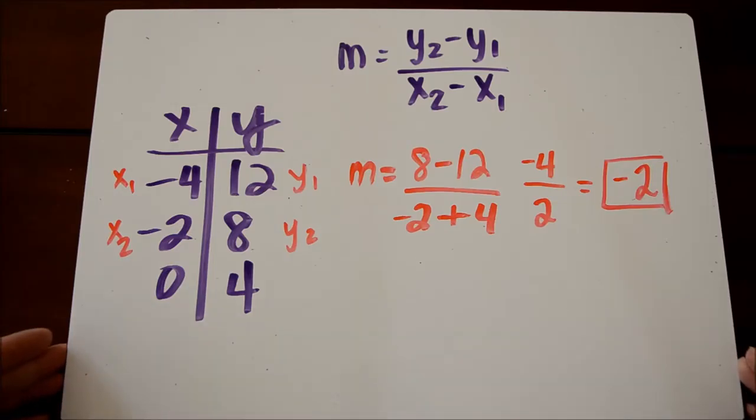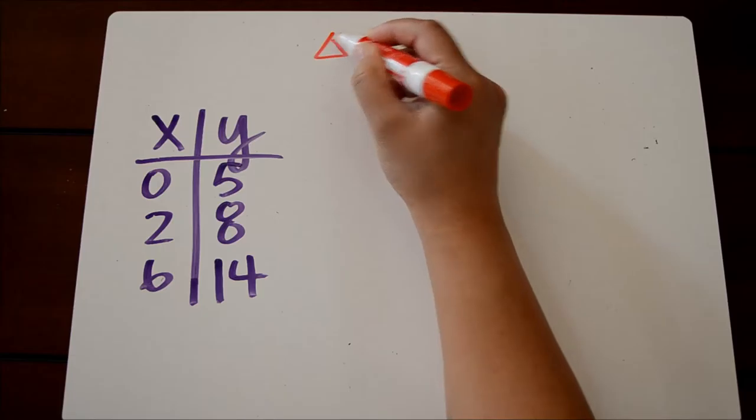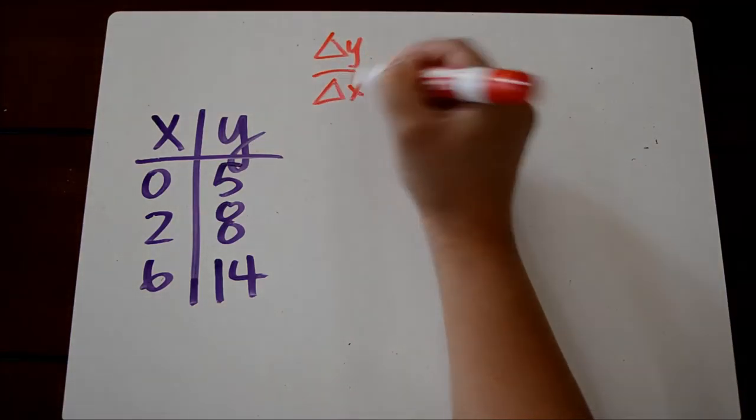All right, let's take a look at one more example. We're going to apply both methods, just so you can see that it doesn't matter which method you use, and it doesn't matter which points you use either. So let's try delta y over delta x, and we're going to choose the first two points on our table of values.